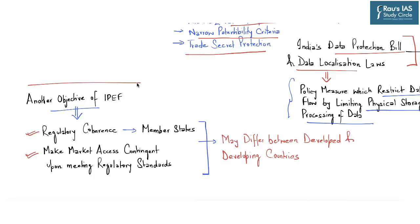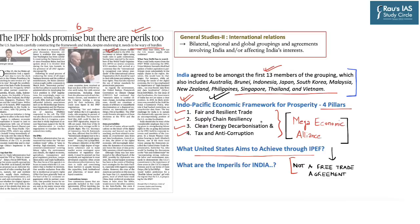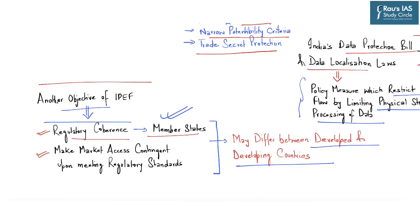Another important objective of IPEF is ensuring regulatory coherence among member states. However, regulatory coherence on a number of issues including IPR, environment and climate change issues, and labor rights differs between developed and developing countries. The Government of India may face certain problems regarding this objective of IPEF, which is to ensure having almost common regulatory requirements with respect to the four pillars: fair and resilient trade, supply chain resiliency, clean energy decarbonization and tax and anti-corruption measures. IPEF highlights that it can make market access contingent upon meeting these regulatory standards, which may also act as a barrier for India.